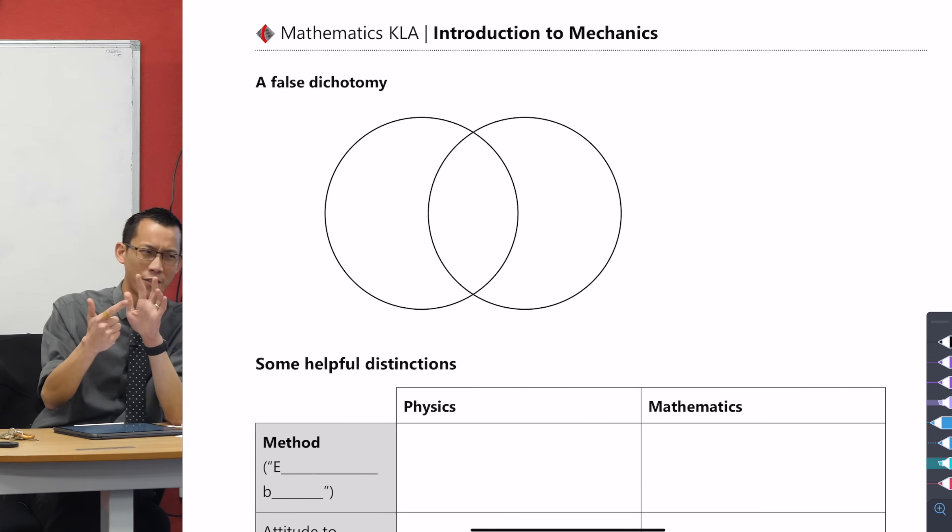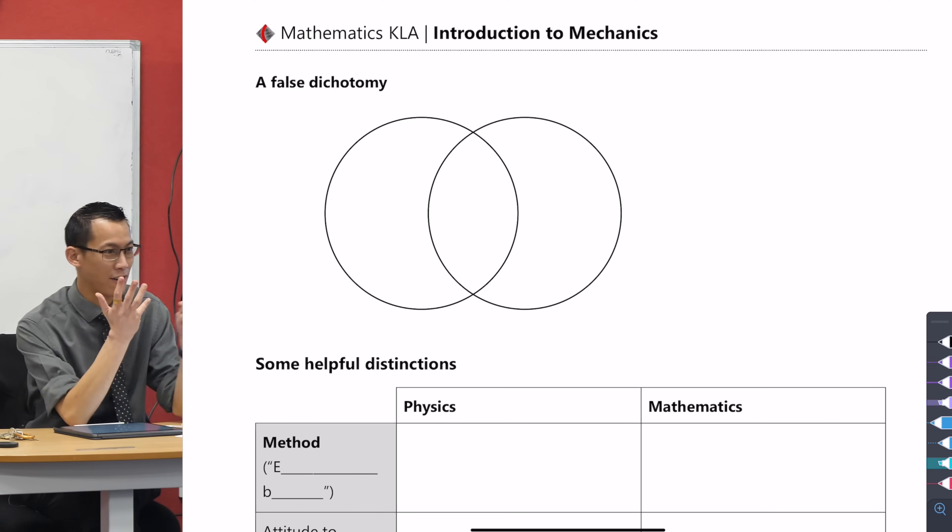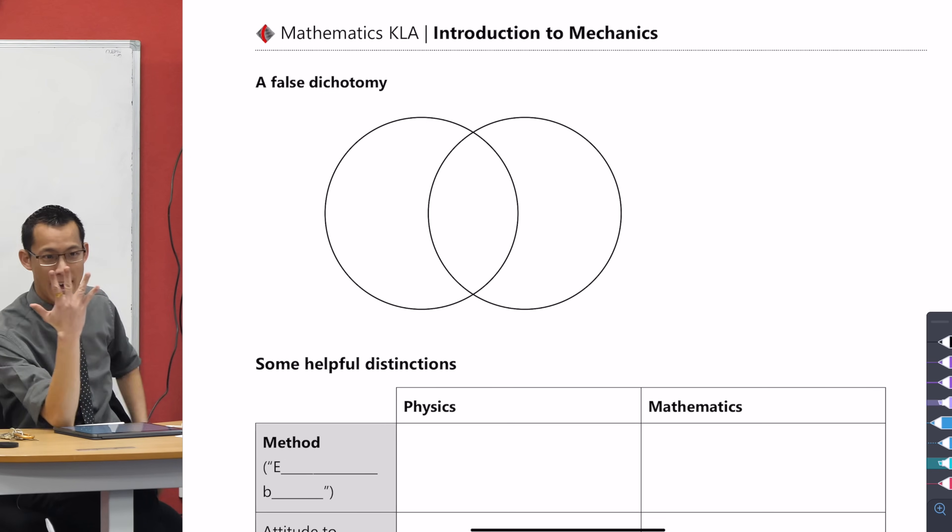Let's try them in some order. Complex numbers last year are Nature of Proof. Then we had a look at 3D vectors. Most recently we did further integration. And then finally there is Mechanics. Five topics.